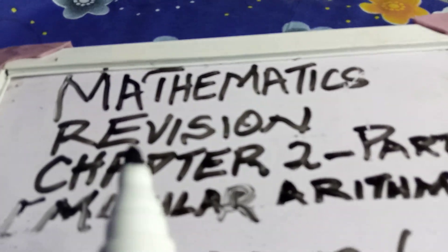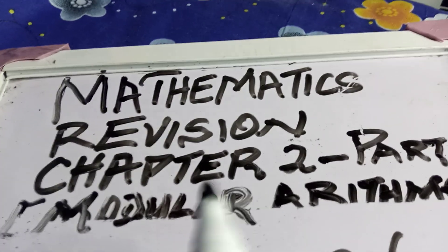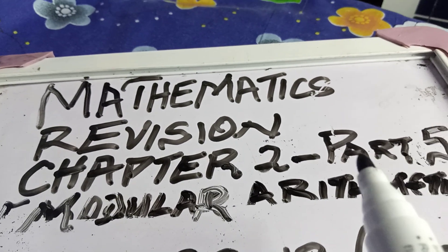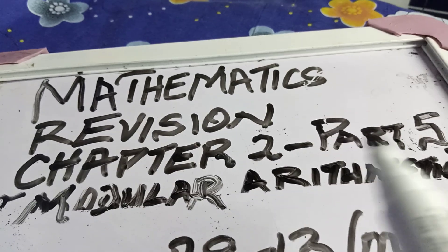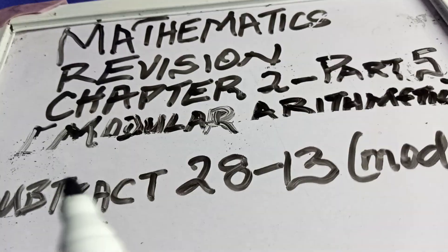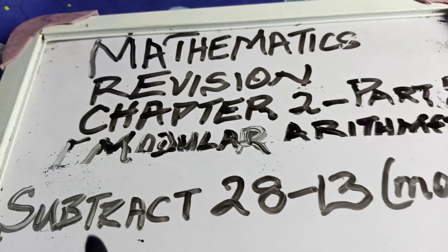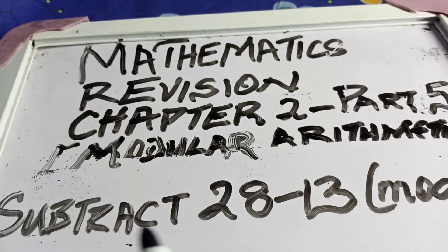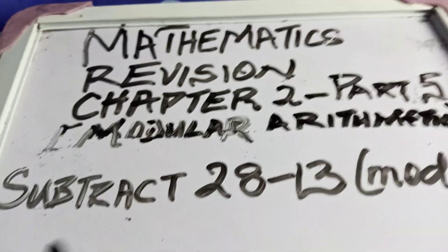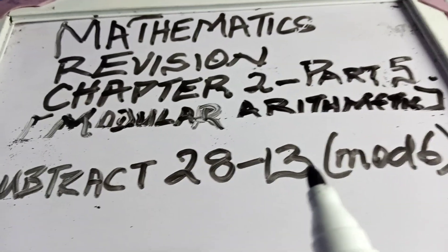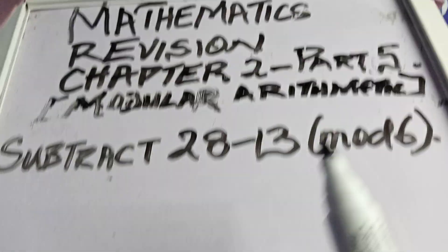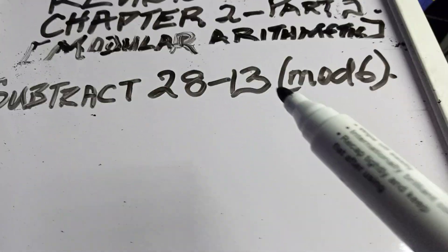This is mathematics revision on chapter 2, part 5. Chapter 2 is tied to modular arithmetic in our curriculum lesson. The question to tackle is: subtract 28 minus 13, mod 6. Watch how we do it.